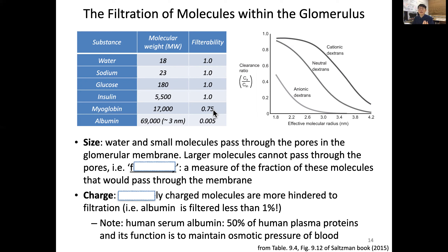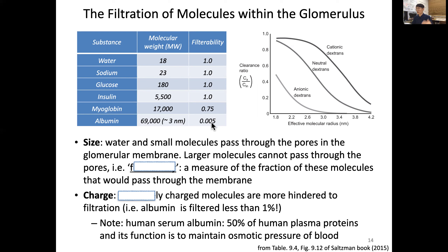Albumin is about 69 kilodaltons, which is pretty big, corresponding to a molecular radius of about 3 nanometers. That is still tiny compared to the 90-nanometer pores in the kidney filter. But look - the filterability is almost 0.005, less than 1%. What happens here?